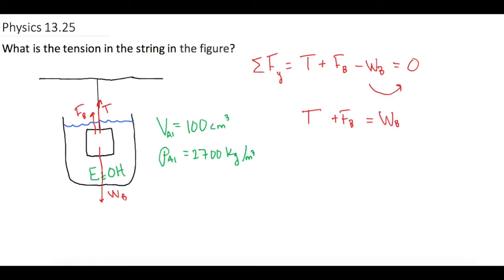That makes sense because if the weight was heavier than the buoyant force and the tension, the string would break and it would sink to the bottom. Or if the tension and the buoyant force had more force on that side, then it would float up to the top and the string wouldn't be holding it as much.